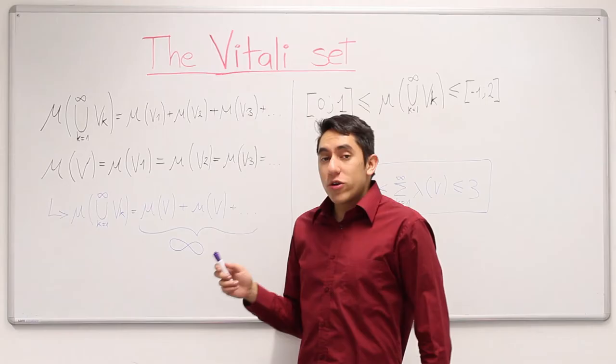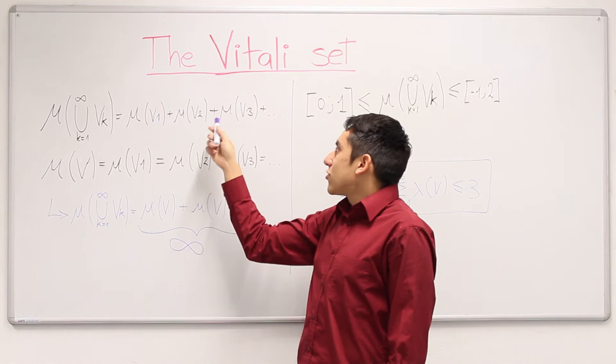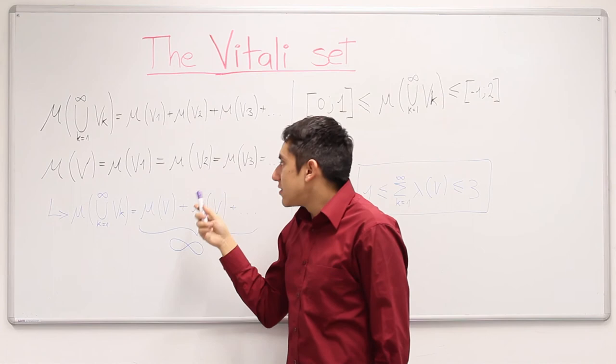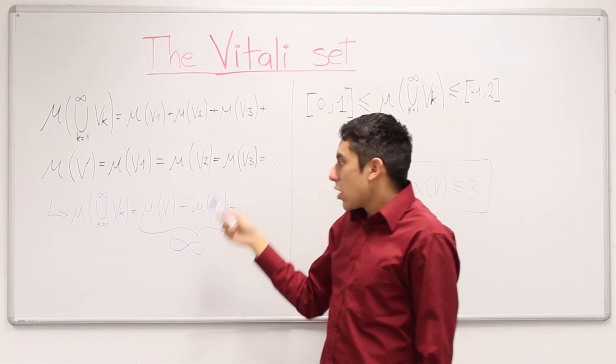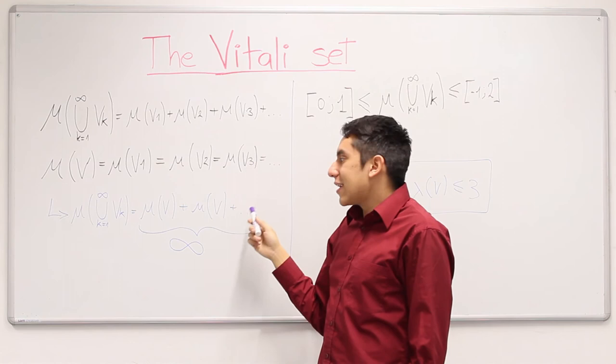With the help of sigma additivity, we can sum the translated sets because they are disjoint. As translation invariance states, the shifting movement doesn't change the size, so the translated sets have the same size as the Vitali set. Combining these two formulas, we derive that the union of the translated sets is just the sum of the Vitali set infinite many times.